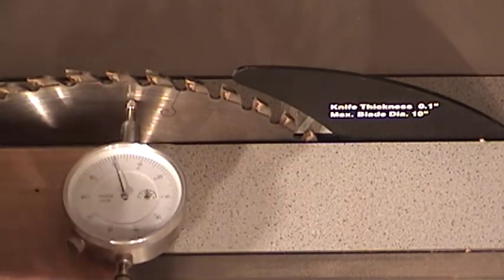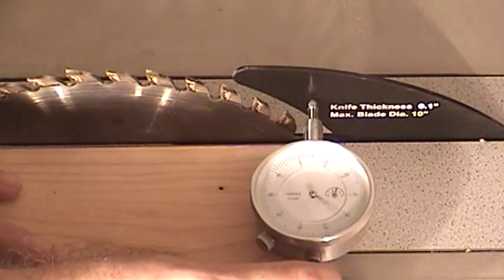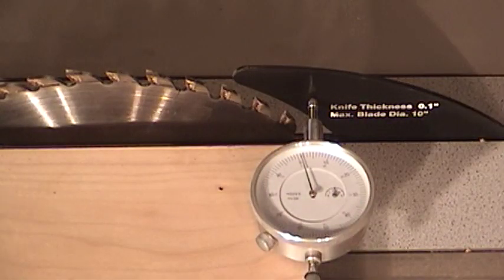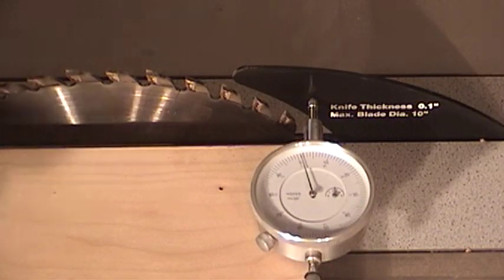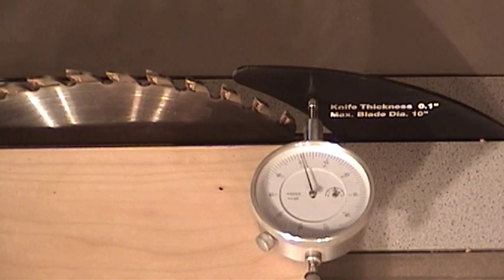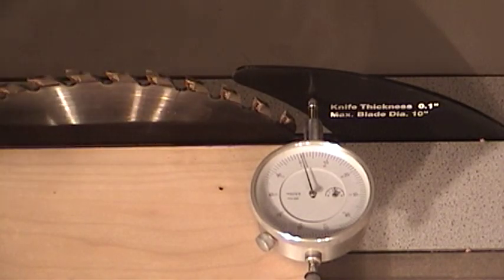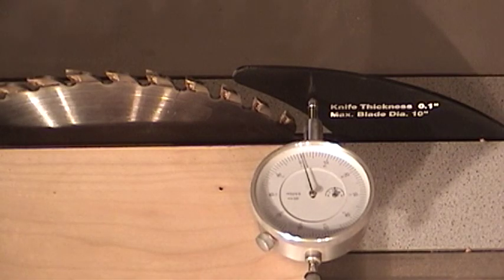And now all I need to do is push the jig back over on top of the riving knife and take a reading. And mine is showing that it's about one thou off in this direction, which in my opinion is not too bad.